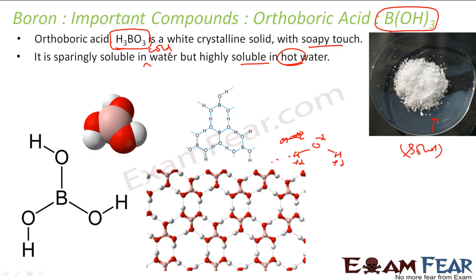The hydrogen bond helps boric acid form this cage-like structure. So when you think of acid, you might expect a liquid state, but in this case boric acid is solid. Also, it is a Lewis acid — we will discuss that shortly.